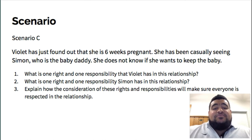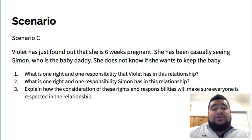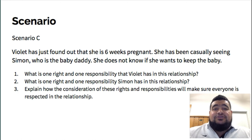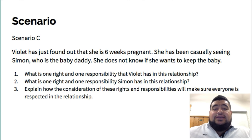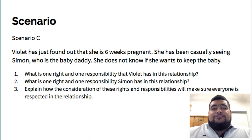Number one, what is one right and one responsibility that Violet has in this relationship? Number two, what is one right and one responsibility that Simon has in this relationship? And number three, explain how the consideration of these rights and responsibilities will make sure that everyone is respected in this relationship. Take your time — you might need to do some googling for some of these scenarios, and you might need to put your hand up and ask your teacher. Feel free to ask your friends for help as well, but stay on task. Let's learn stuff. See you!